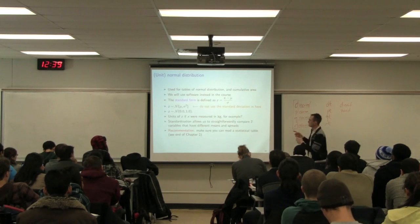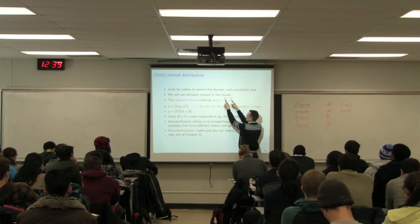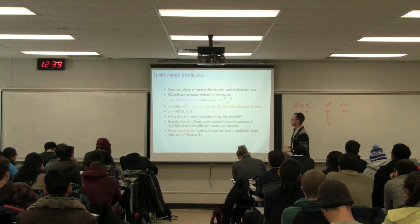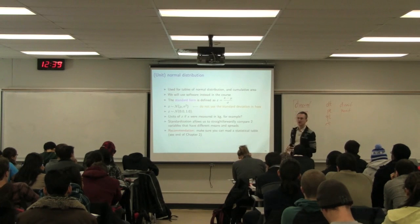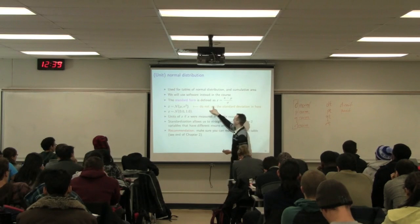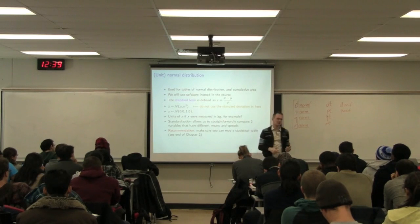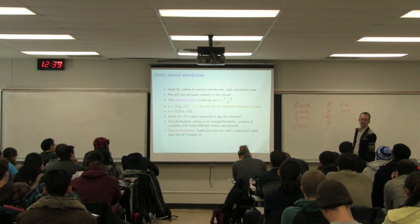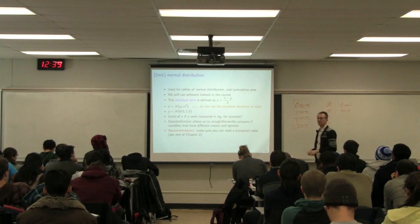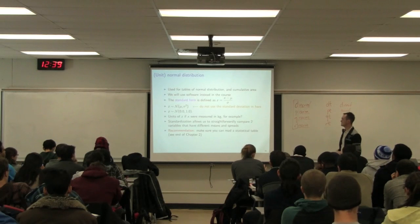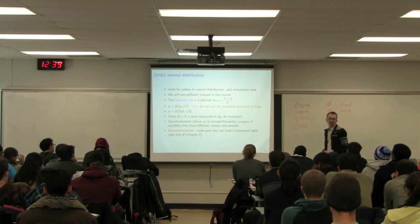The numerator expression is called centering — we're shifting the distribution to center at zero. Dividing through by the standard deviation is called scaling. So after centering and scaling, I get the standardized variable z. Z has mean zero, standard deviation one, and variance one. Standard deviation and variance are the same for the standardized distribution, since they both equal one.